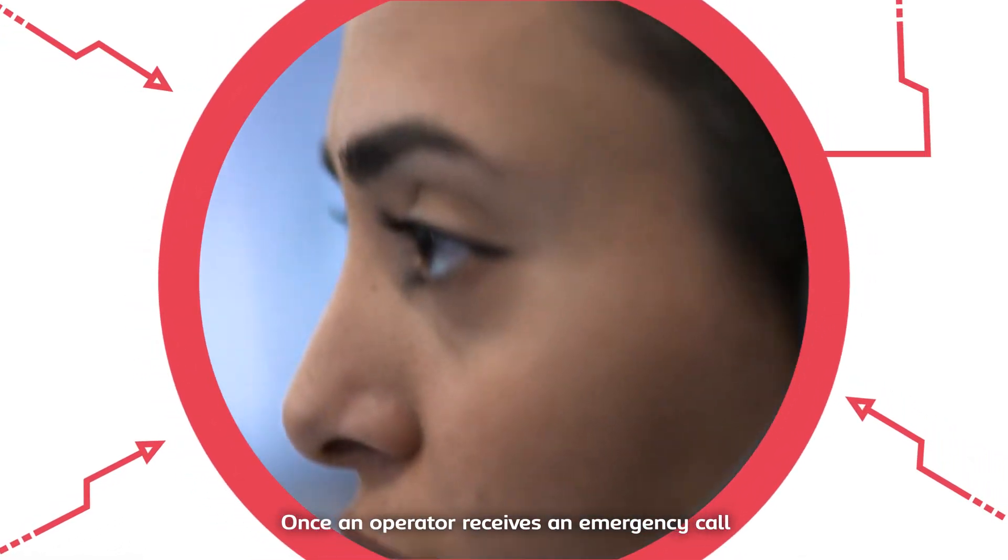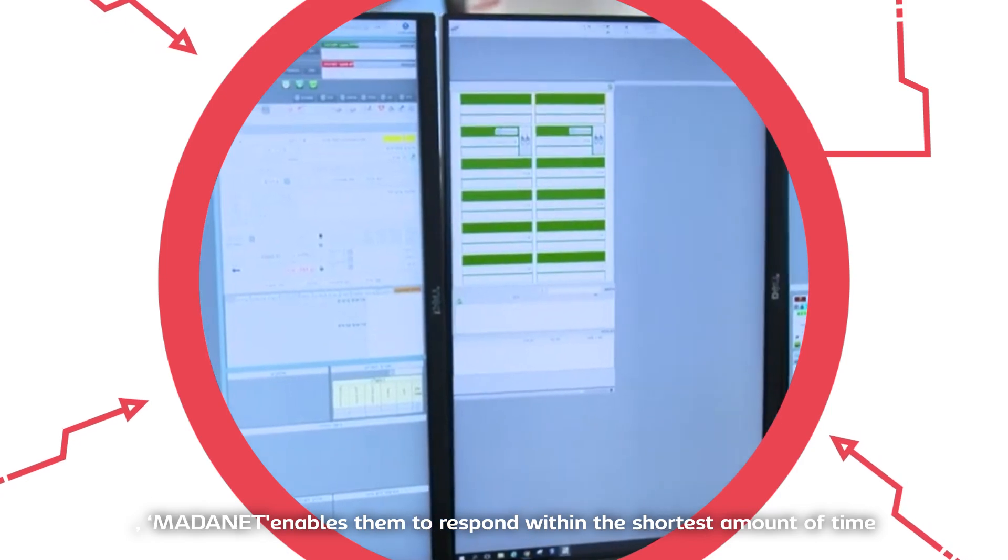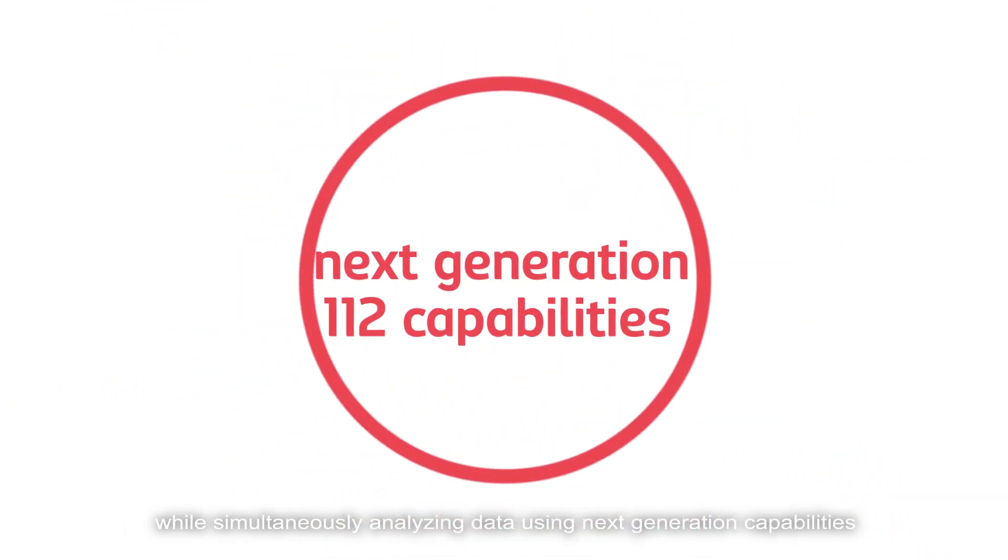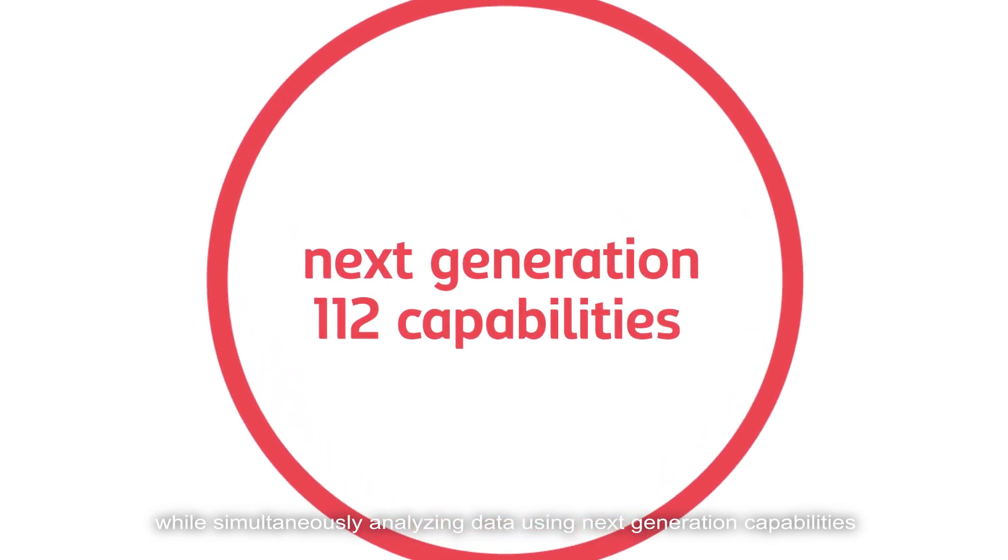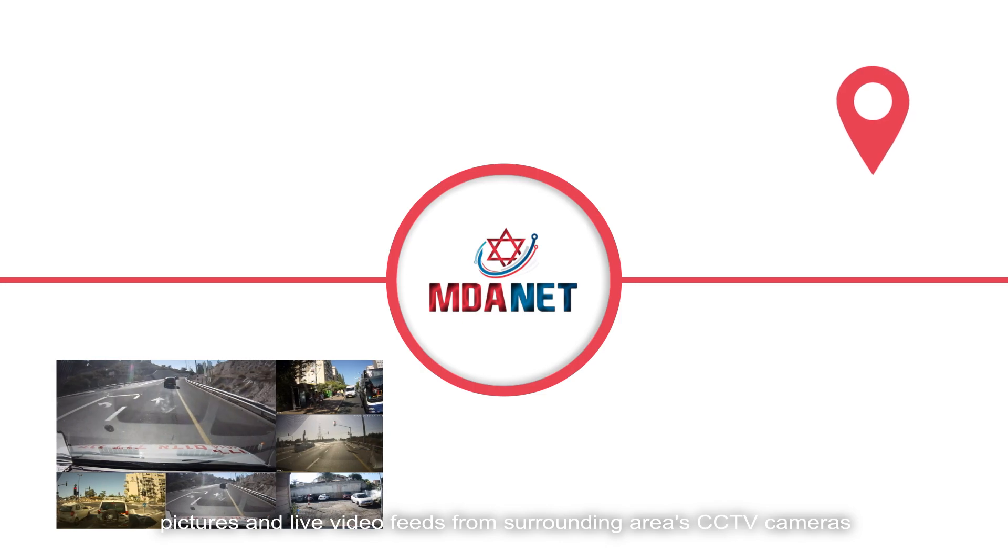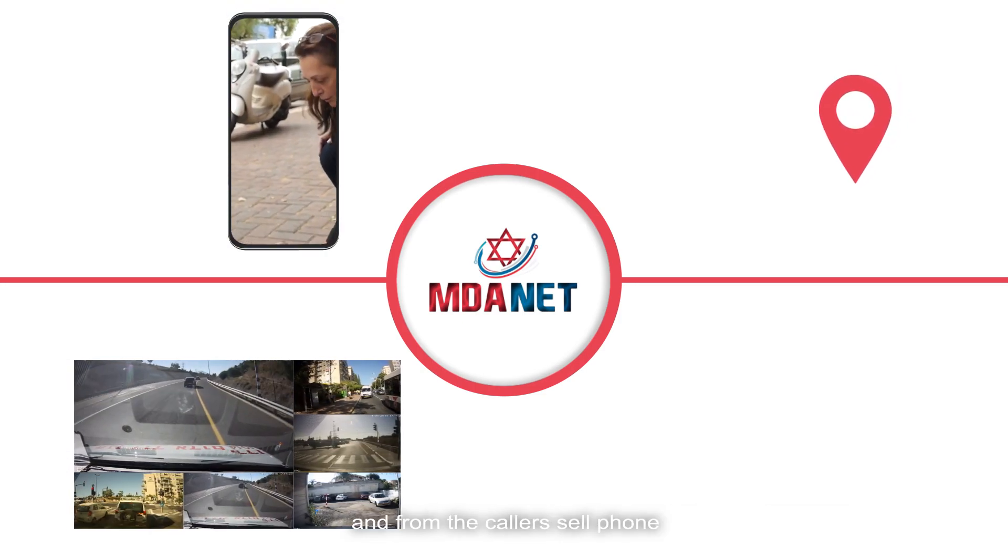Once an operator receives an emergency call, Madanet enables them to respond within the shortest amount of time and start gathering all incoming information while simultaneously analyzing data using next-generation capabilities such as geolocations, pictures, and live video feeds from surrounding area's CCTV cameras and from the caller's cell phone.